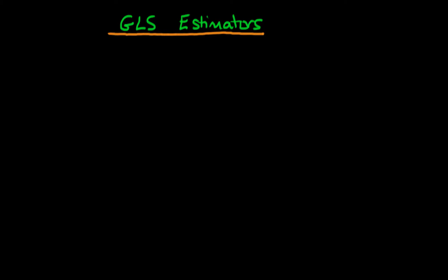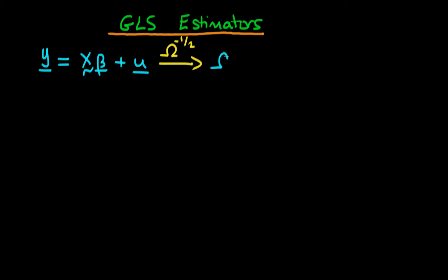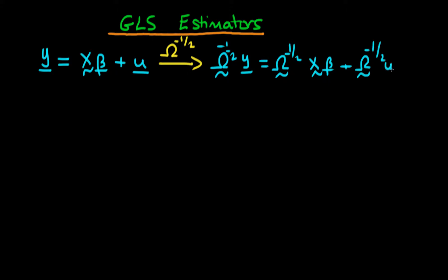In this video, we're going to derive the explicit form of GLS estimators. Remember what GLS is: we have our original model y = Xβ + u, and we transform it by multiplying both sides by our transformation matrix, which is the variance-covariance matrix to the power minus one-half. This yields our transformed system: Ω^(-1/2) y = Ω^(-1/2) Xβ + Ω^(-1/2) u. We then estimate OLS on that transformed system. Because the transformed error is homoscedastic, OLS turns out to be BLUE.